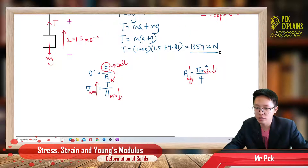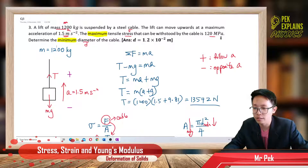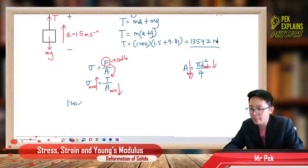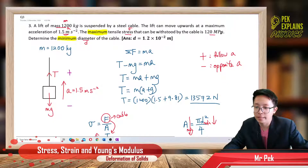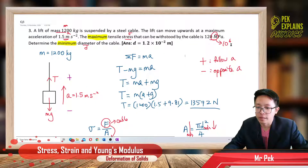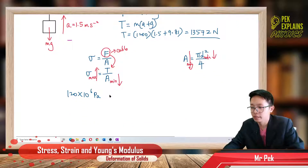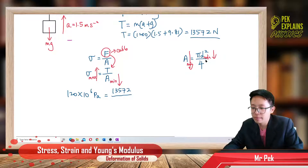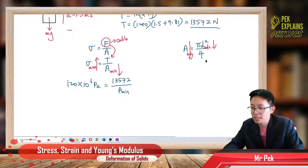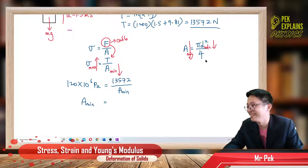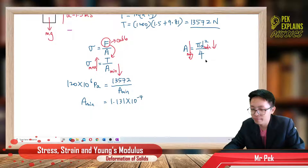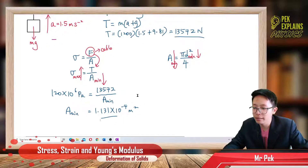Let's find the area first. The maximum stress is 120 MPa. Mega is 10 to the power of 6, so change to SI unit: 120 × 10⁶ pascals. I already have the tension of 13,572 N. Using stress = tension / area, the minimum area works out to 1.131 × 10⁻⁴ square meters. That's the minimum area.